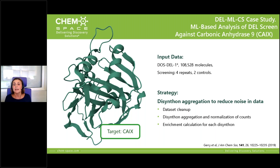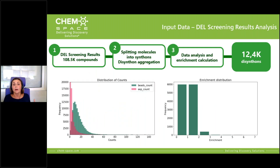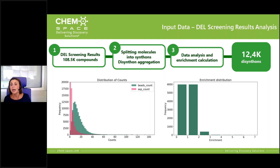We came up with a so-called disynthon aggregation approach to reduce noise in the data and normalize counts. Each molecule from the DEL was split into disynthons. We then aggregate these disynthons and calculate the enrichment. On the left you can see the distribution of counts for non-target selection and target selection. On the right is the enrichment distribution for disynthons — you can see that some disynthons are more enriched and some less. The total number of disynthons for this particular library was 12.4K.